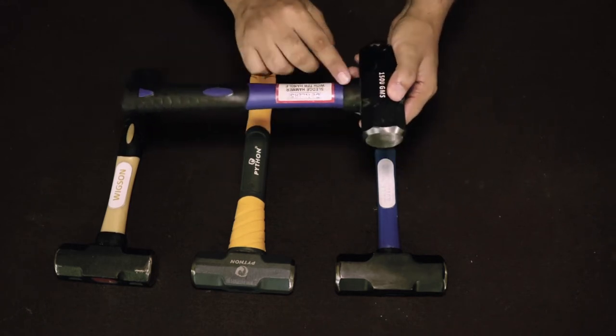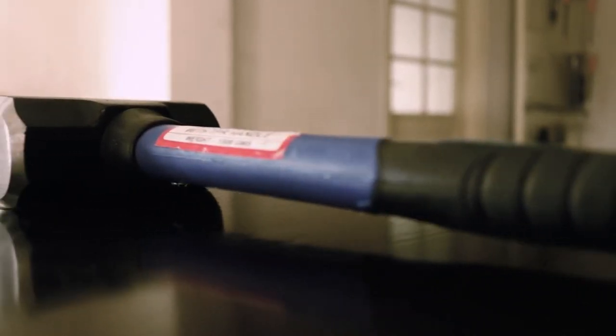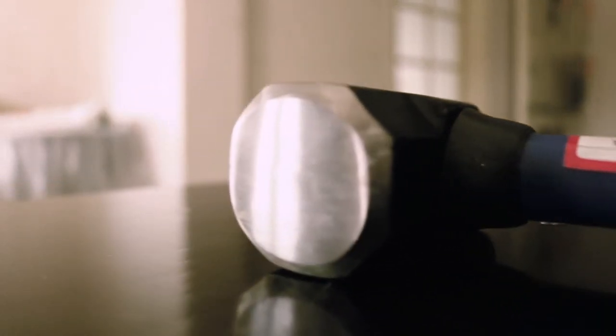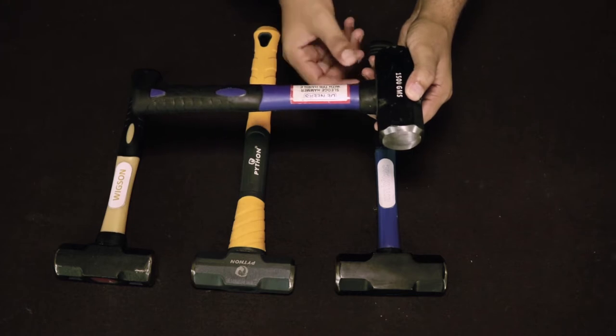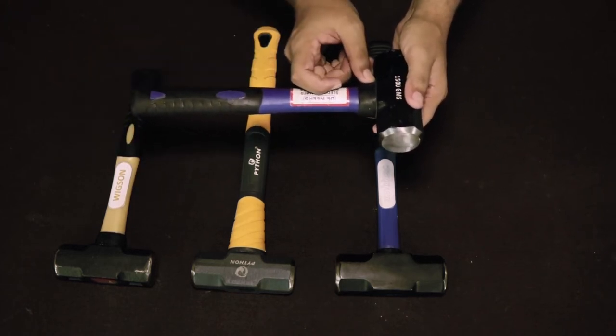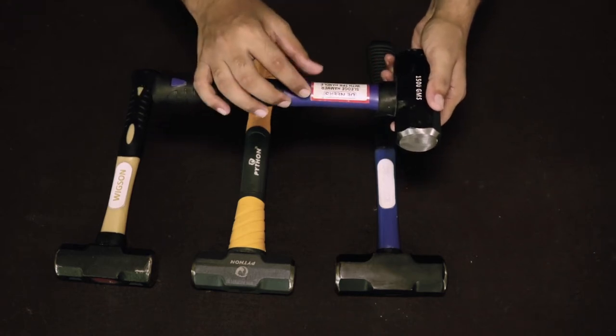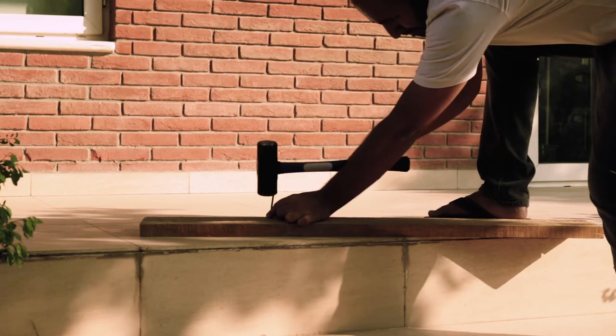On the bottom, we call this particular portion overstrike protection. When you hit your target, if your target is mis-hit, it protects your handle. In D Nears sledgehammer, the overstrike protector is very small. If your target is mis-hit, there are chances that you can hit the handle and damage it.